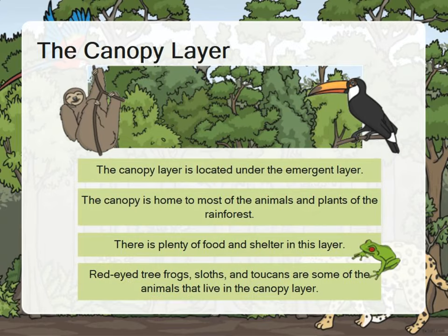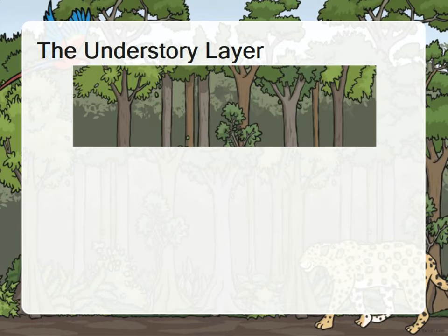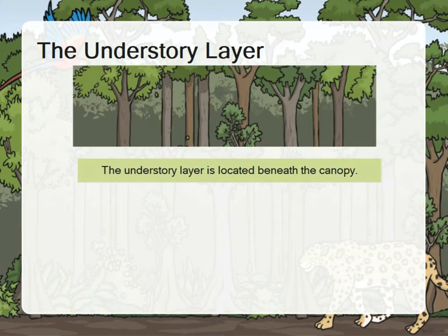Red-eyed tree frogs, sloths, and toucans are some of the animals that live in the canopy layer. The understory layer is located beneath the canopy.